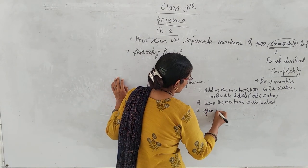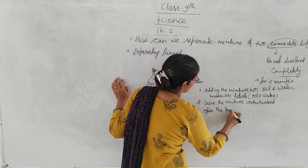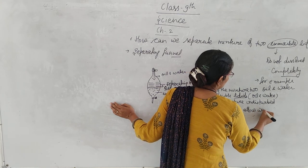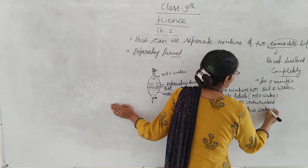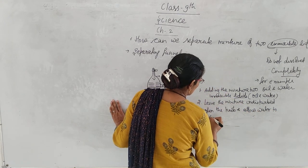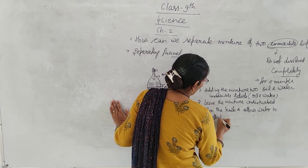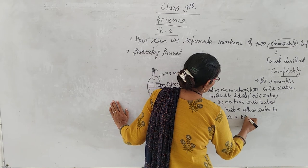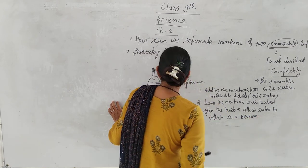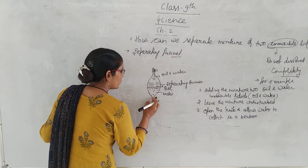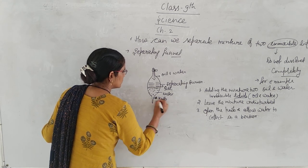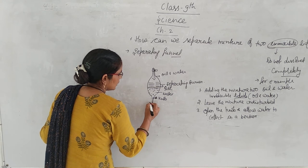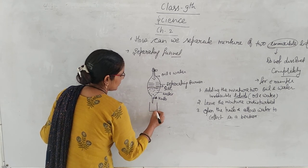The third step: open the knob of the separating funnel and allow the water to pour and collect in a beaker placed below. When you open the knob, the water at the bottom flows out into the beaker.